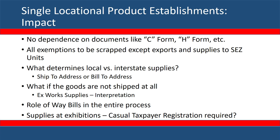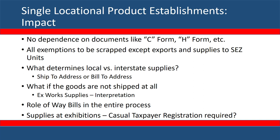Waybills will also create challenges and need to be synchronized with the overall process. If your products move to exhibitions in different states and supplies happen from those states, you'll need a casual taxpayer registration in that state, since the final supply occurs at the exhibition hall in another state.